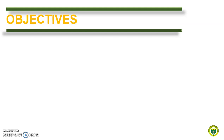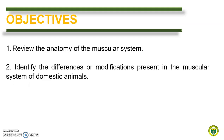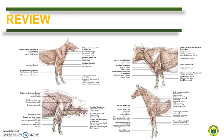At the end of this module, each student should be able to review the anatomy of the muscular system and identify the differences or modifications present in the muscular system of domestic animals. To review the basic anatomy of the system, you may find a tabulated list of muscles with their origin, insertion, and their innervation on the PDF copy of this module. This presentation will only highlight the comparative features in the muscular system of the different domestic animals.